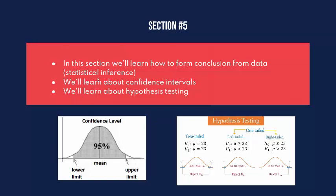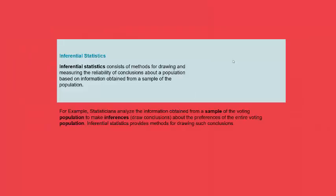This final section here is called inferential statistics. This consists of methods for drawing and measuring the reliability of conclusions about a population based on the information obtained from a sample of that population. For example, statisticians analyze the information obtained from a sample of the voting population to make inferences, drawing conclusions about the preferences of the entire voting population. Inferential statistics provide us methods for drawing such conclusions.